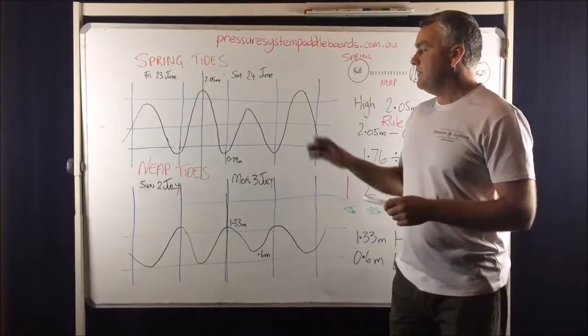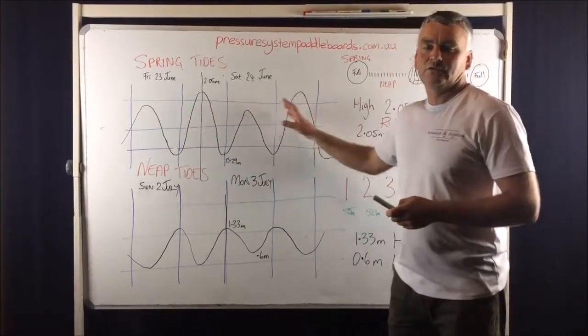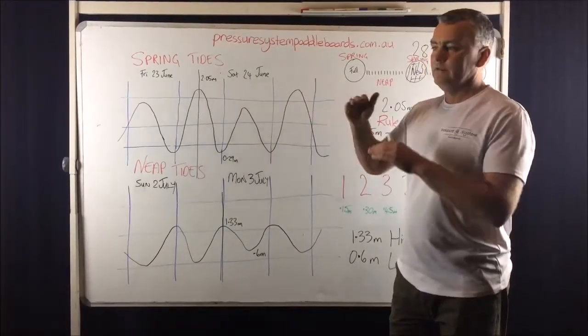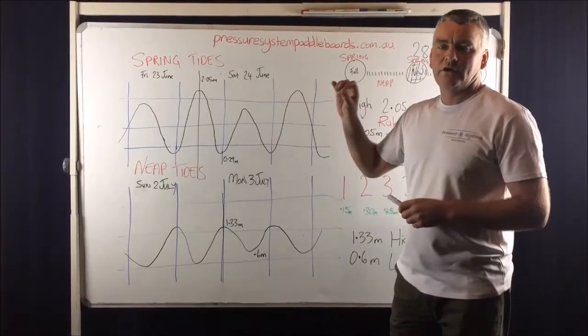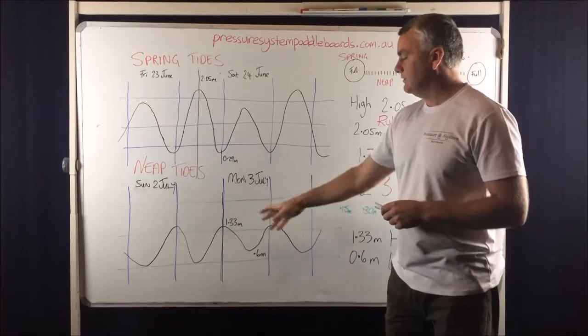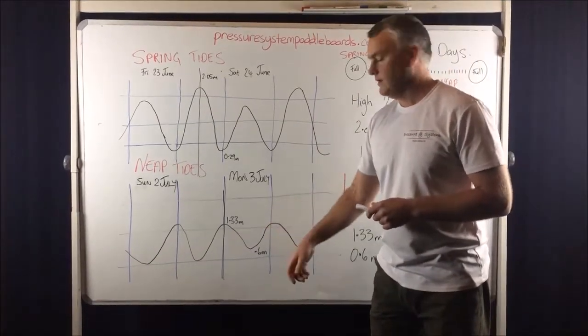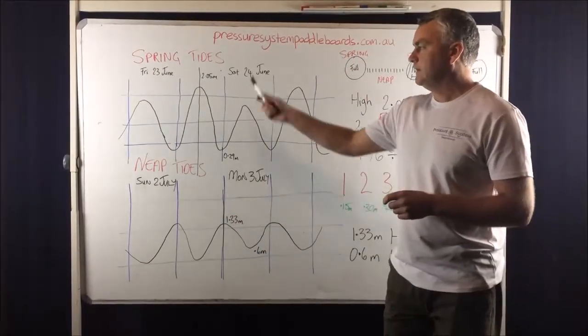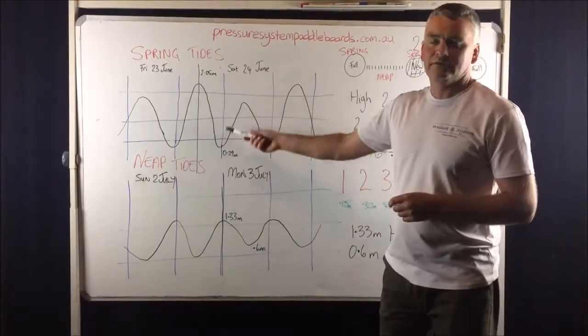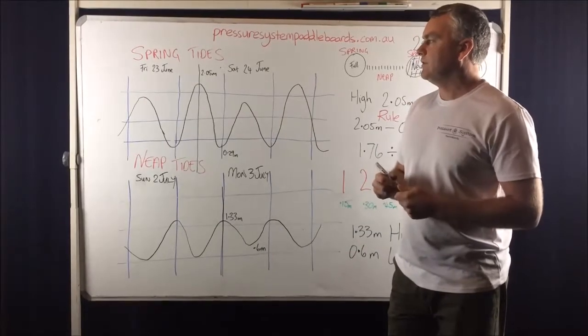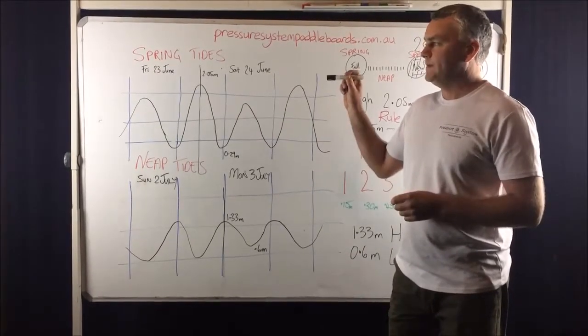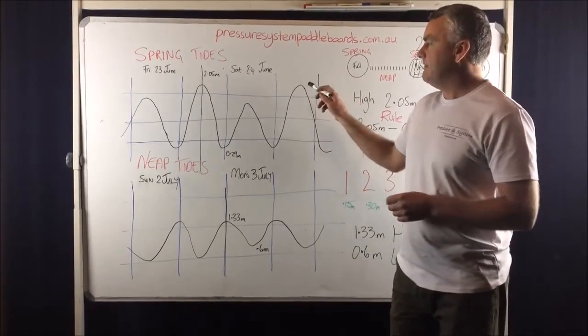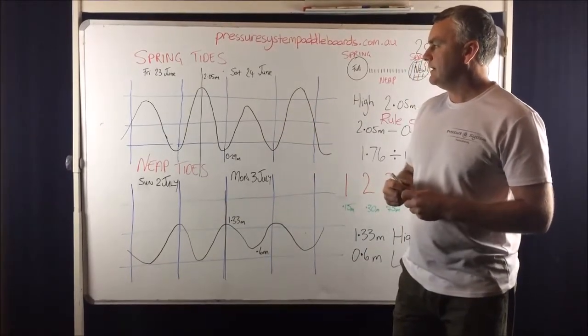Now this is the Marimbula Lake I'm talking about here. Every section along the coast, the tide times will vary. So don't look at these here and go, on Monday 3rd of July I'm in Batemans Bay, I'm going to have a high tide then at 1.33. This is Marimbula. I've copied this off willyweather. When you go on willyweather.com.au and you click on tides, you'll be able to select your location and that'll give you your tides for that area.